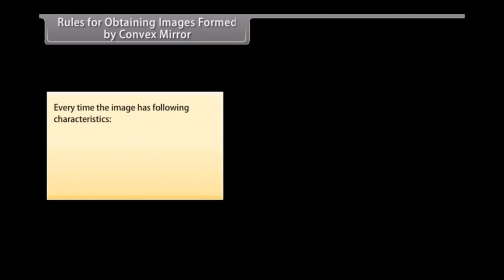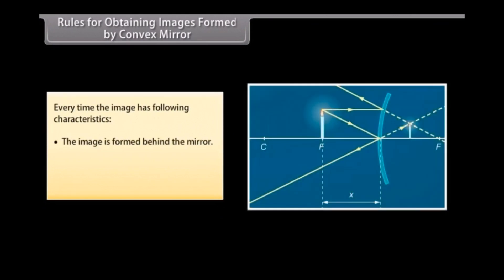Every time, the image formed by a convex mirror has the following characteristics: the image is formed behind the mirror, it is virtual and erect, and smaller than the object.